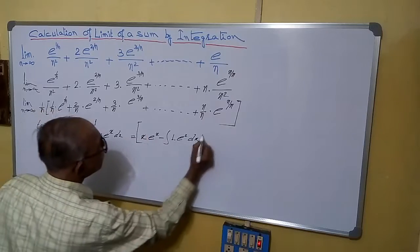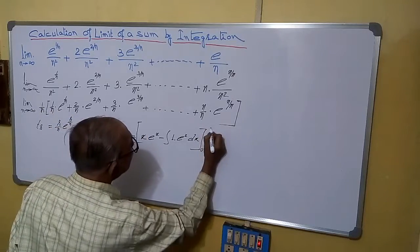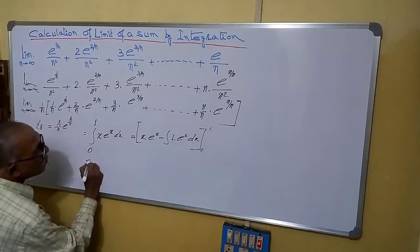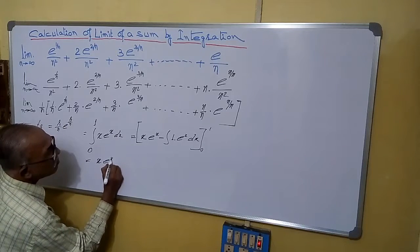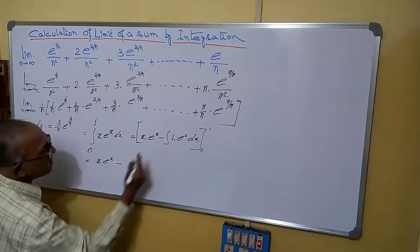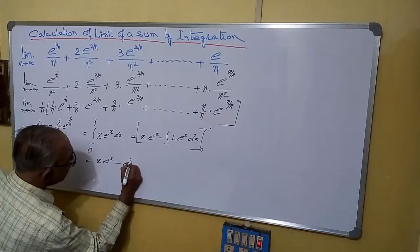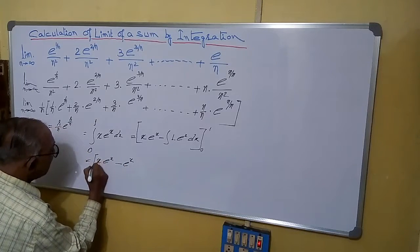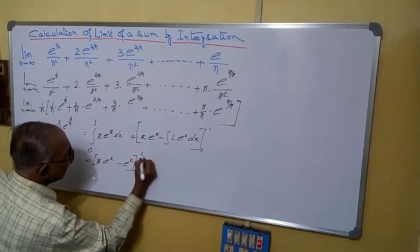The whole thing is from 0 to 1. That equals to x·e^x minus integral of e^x is also e^x, from 0 to 1.